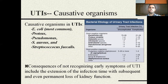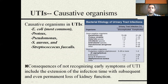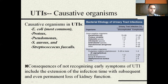The most common causative organism for UTI is E. coli. Following E. coli, there are other organisms like Proteus, Pseudomonas, Staph aureus, and Streptococcus faecalis. Causative organisms are divided into gram-negative organisms — including E. coli, Proteus, Klebsiella, Citrobacter, Enterobacter, and Pseudomonas aeruginosa — and gram-positive organisms such as Staph saprophyticus, Enterococci, Group B Streptococci, and Streptococcus aureus.